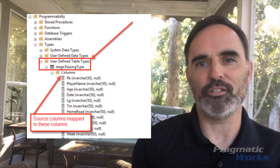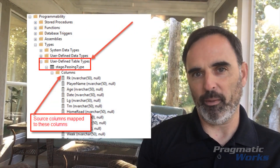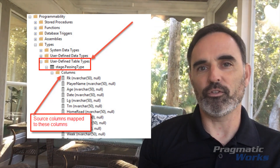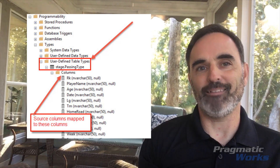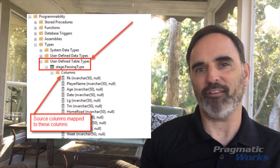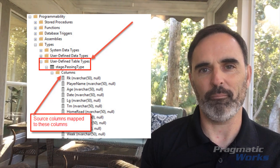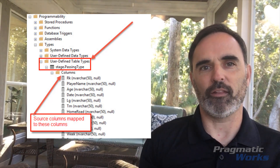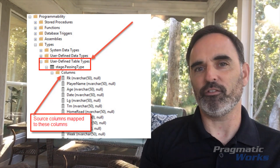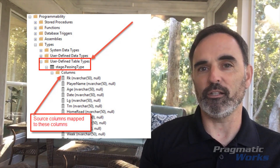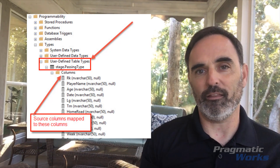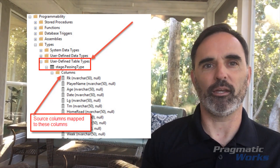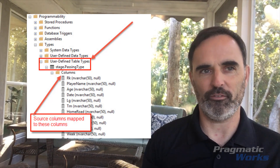Looking at this screenshot, this is an illustration of SQL Server Management Studio. I've created a user-defined table data type that I called stage.passingType — stage is my schema name and passingType is the name of the data type. These are the columns I've defined here, and in my situation these align very closely to the file data that I'm importing into my database. So this is my table data type with those columns defined.